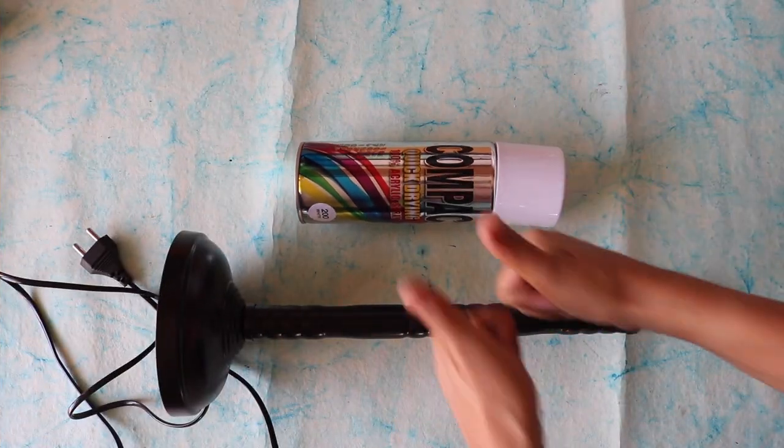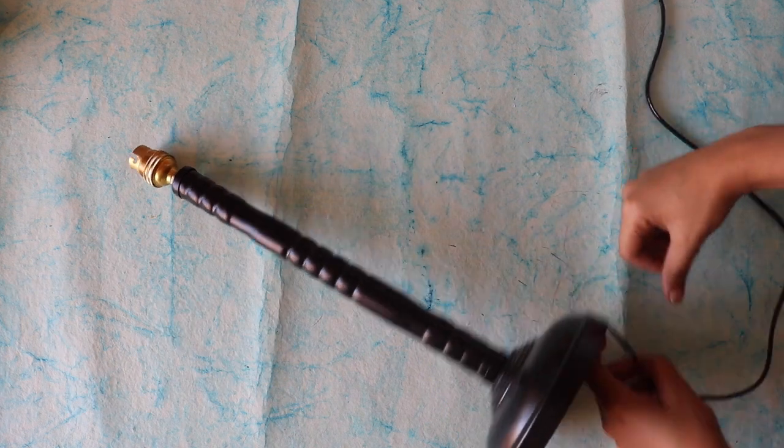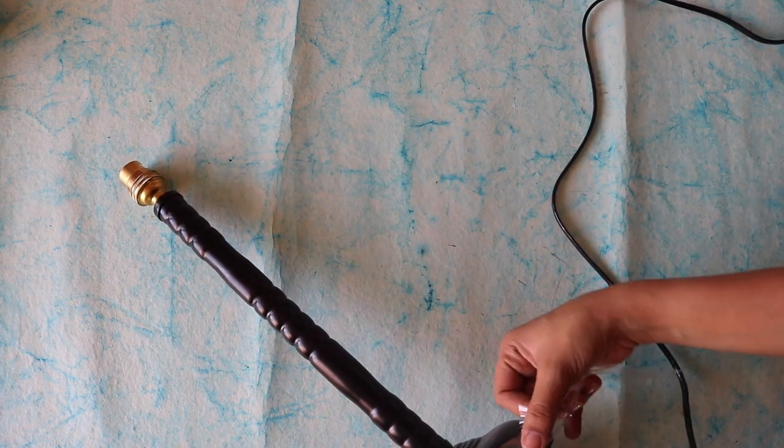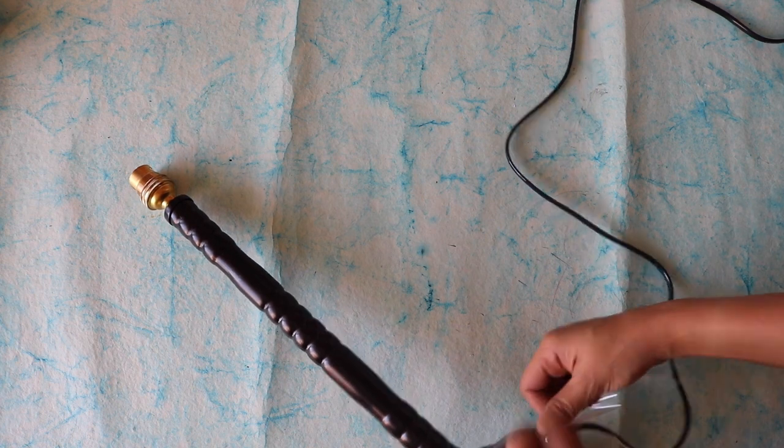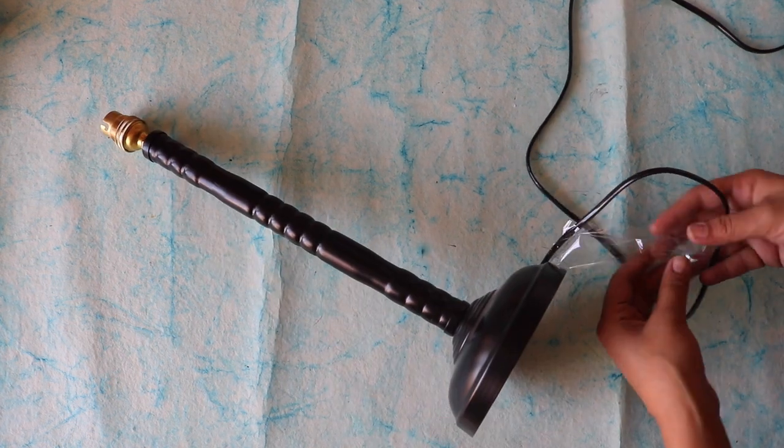I spray painted the metal stand in white color. Before spraying, I coiled cello tape around the wire extending from the stand so as to not let any white paint spill on it.